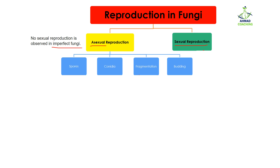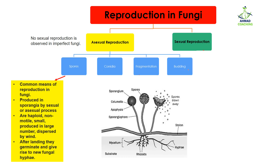Let's talk about how fungi reproduce asexually. There are four methods: the first one is spores, the second is conidia, the third is fragmentation, and the fourth is budding. Depending on which type of fungi we are talking about, any of these methods can be used.